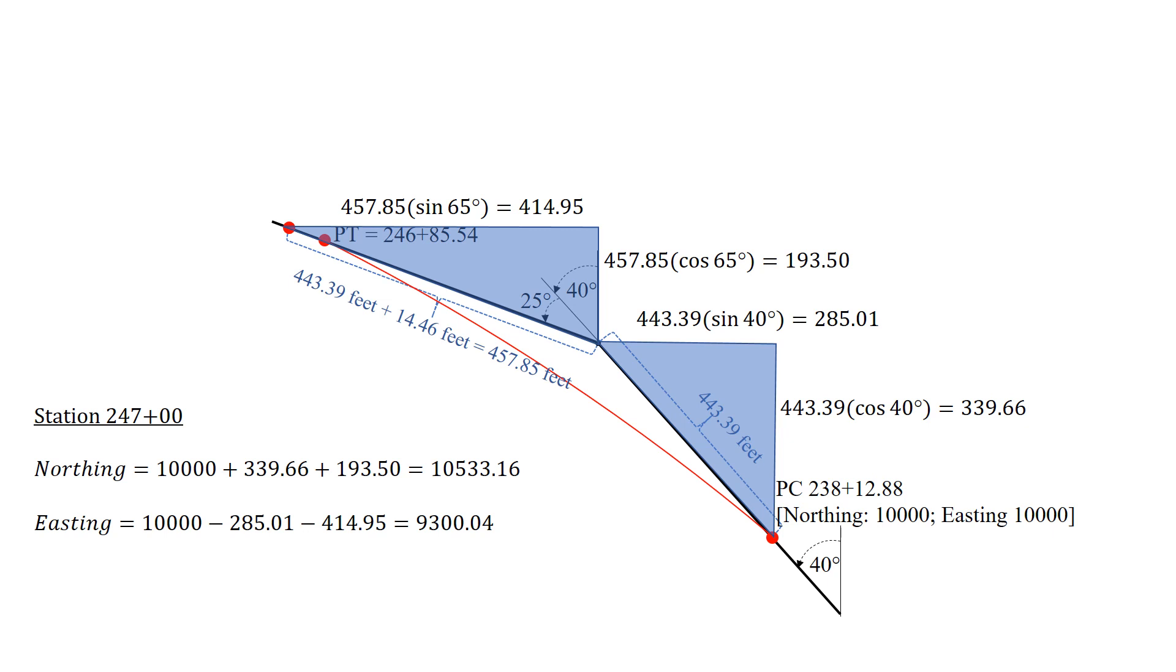For the easting, both of these are moving to the left, moving west, so that's negative. We have 10,000 minus 285.01 minus 414.95 for an easting of 9,300.04. So the final northing and easting: 10,533.16 for the northing, 9,300.04 for the easting.